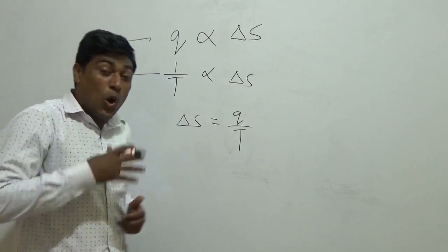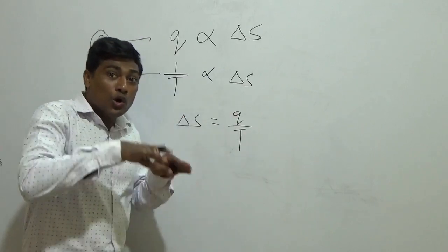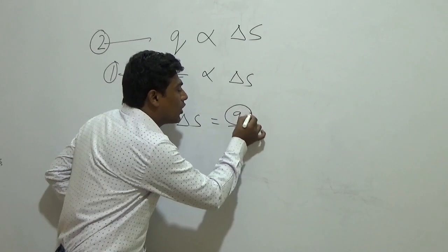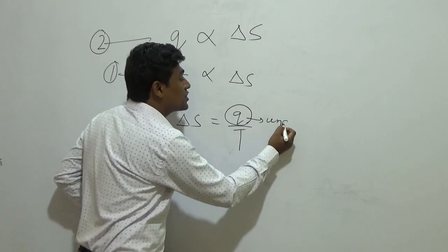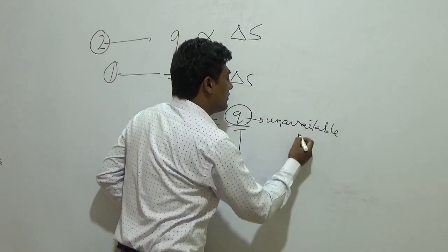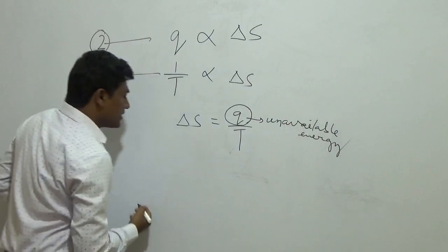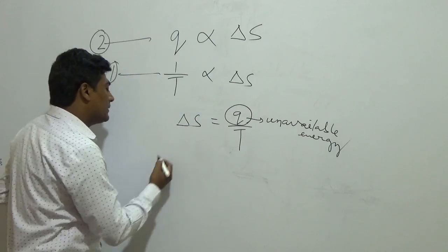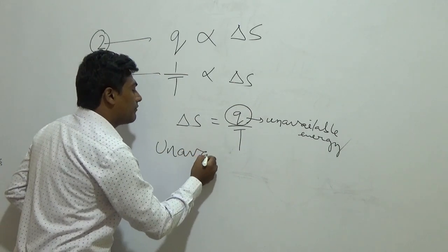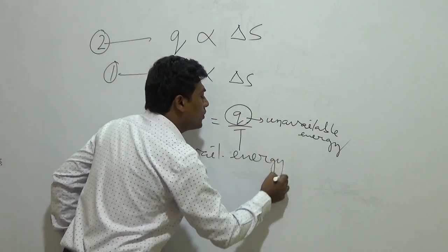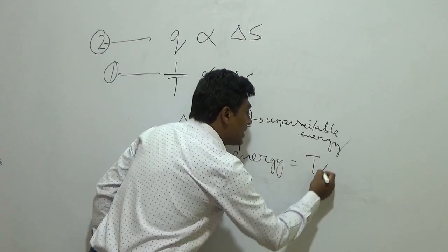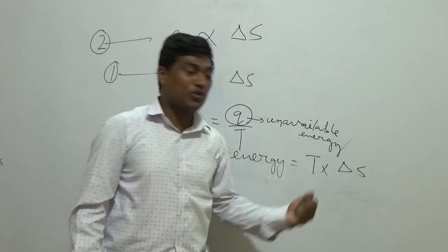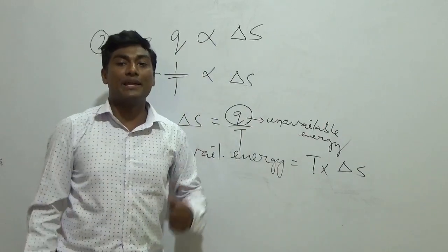So that unavailable energy — in this equation, which term gives us the unavailable energy? The entropy is the unavailable energy. That means the unavailable energy is equal to the temperature into change in entropy, T·del S. Indirectly, this change in entropy relates to the unavailable energy of the system.